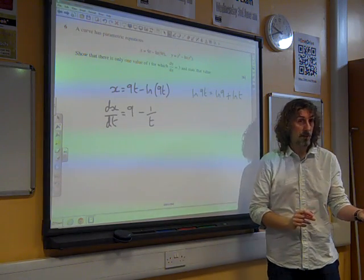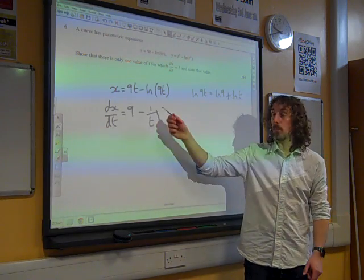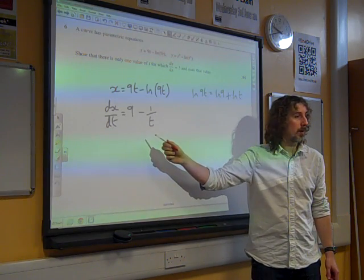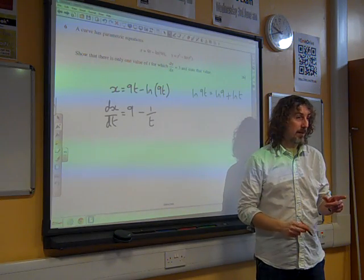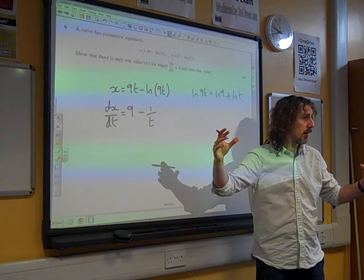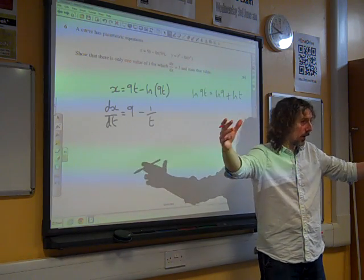If we think about common errors that people will make with that, the most common mistake is that people will end up writing 1 over 9t.